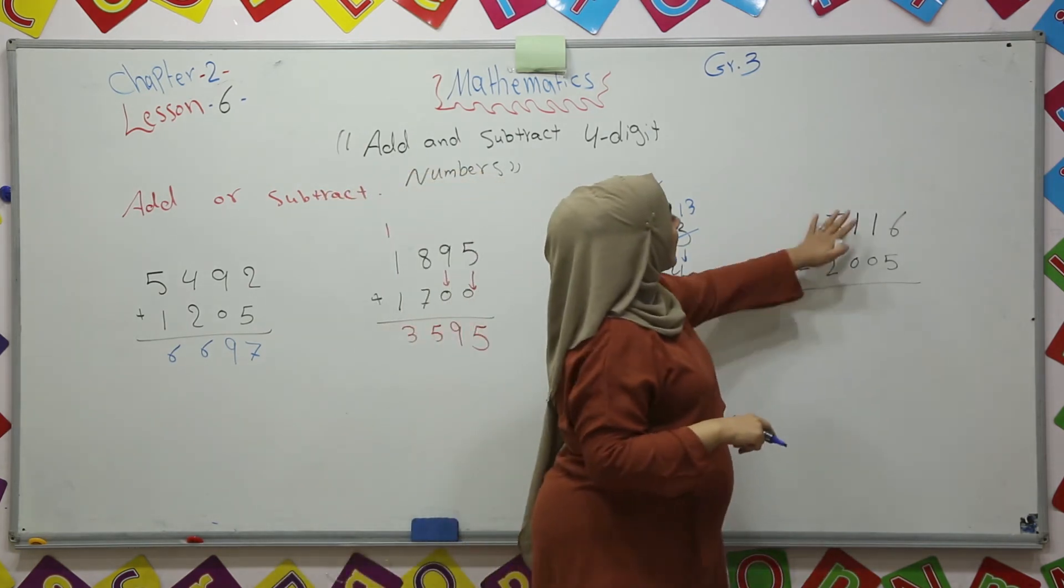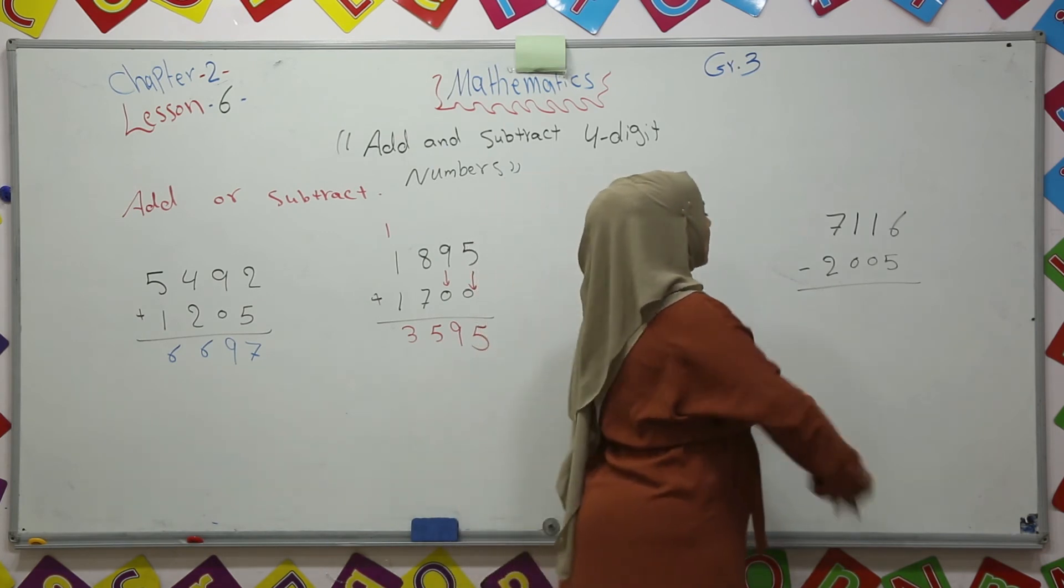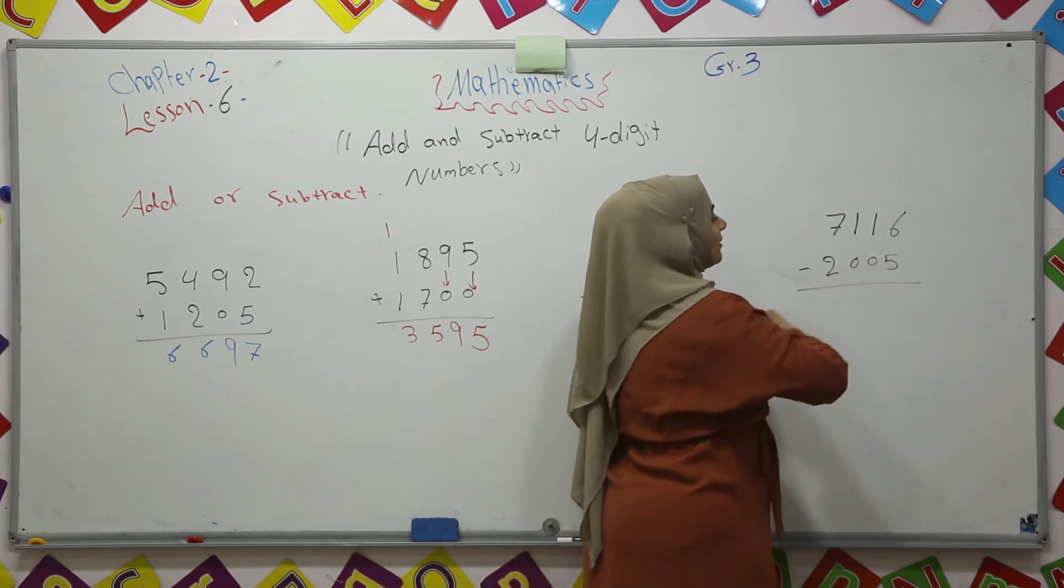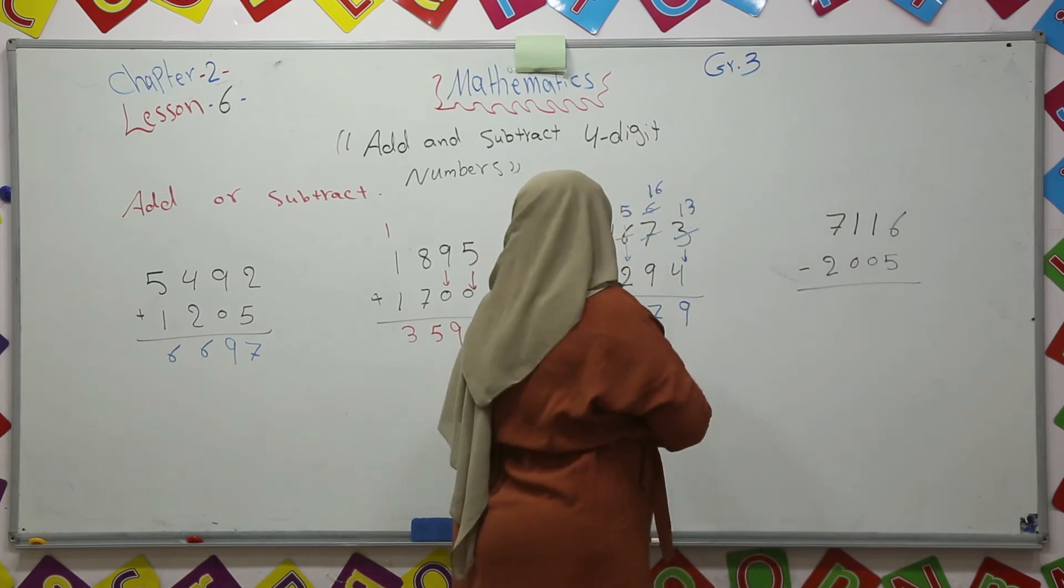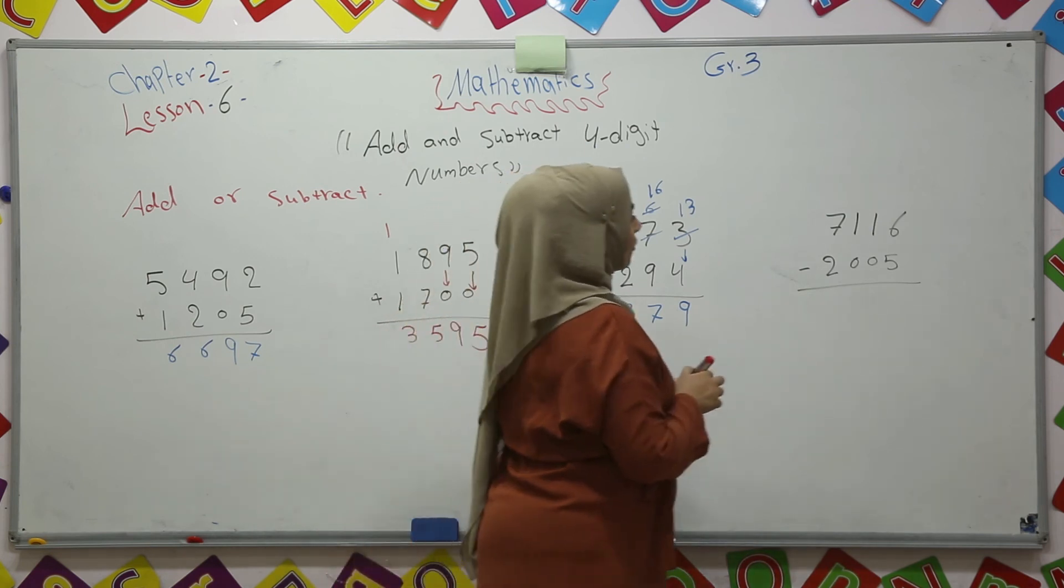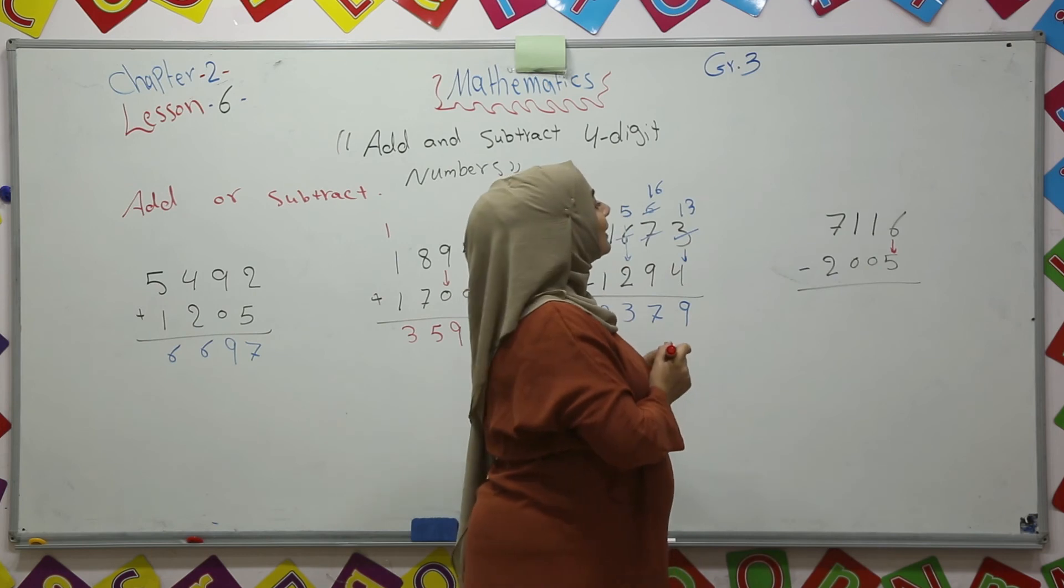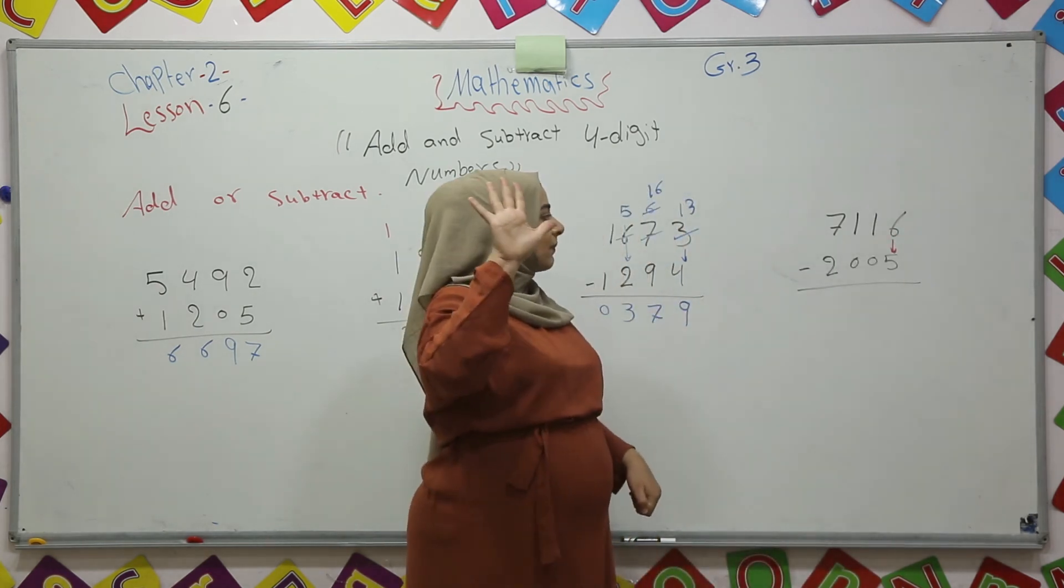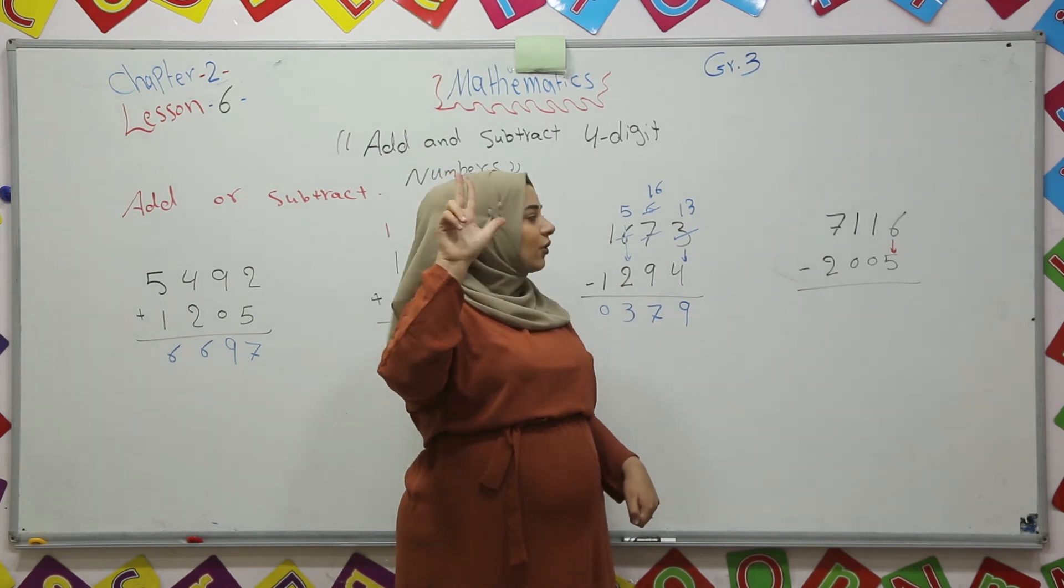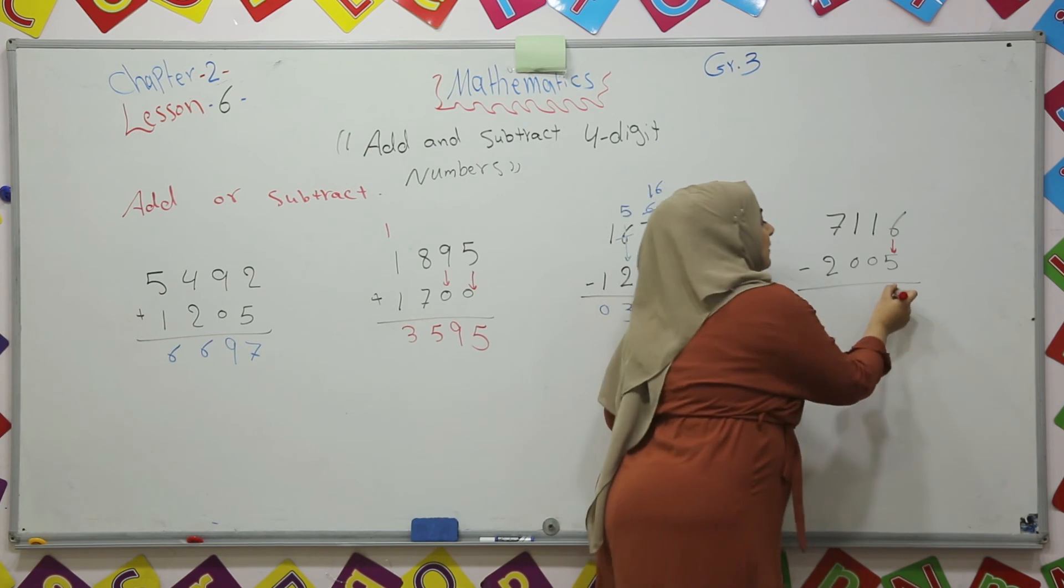Now look at the last example. Seven thousand one hundred sixteen minus two thousand five. We will start from ones. Six minus five. I will count back five numbers from six. Six, five, four, three, two, one. So it is one.